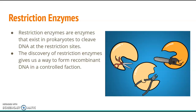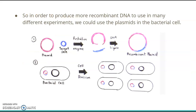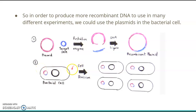The discovery of restriction enzymes gives us a way to form recombinant DNA in a controlled fashion. To produce more recombinant DNA for experiments, we can use the plasmids in bacterial cells. This is a plasmid — a circular DNA that exists in the bacterial cell. We use restriction enzymes to cut both the plasmid and the DNA we want, then use DNA ligase to reconnect them together to form a recombinant plasmid. This recombinant plasmid is introduced into a bacterial cell, and after cell division, we can get many more copies of the DNA we want.